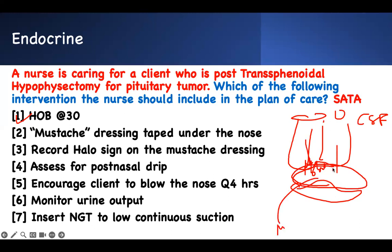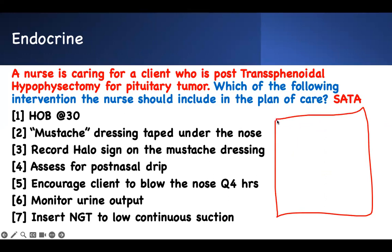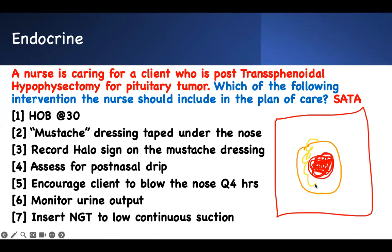You're looking for something called the double ring sign. On the gauze, you're looking for a sign where the center is all red — that's blood — and surrounding it you'll see a different color: a serous or yellow color behind it. That yellow ring is the CSF. The yellow sign indicates a CSF leak.